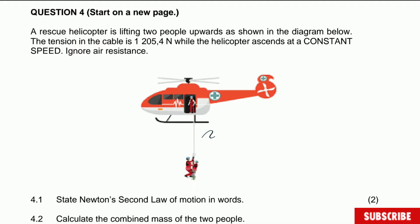So we have the tension on this rope upward, T is equal to 1205.4 Newton. We know that the speed is constant, therefore the acceleration is zero. So let's write that, and there is no air friction.